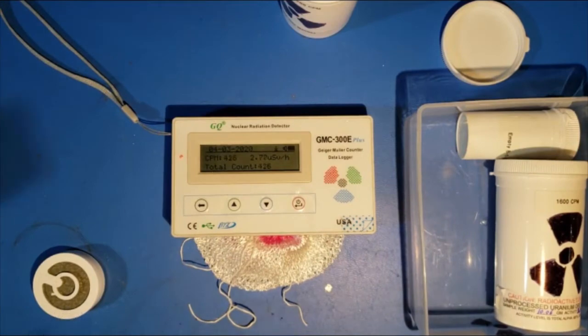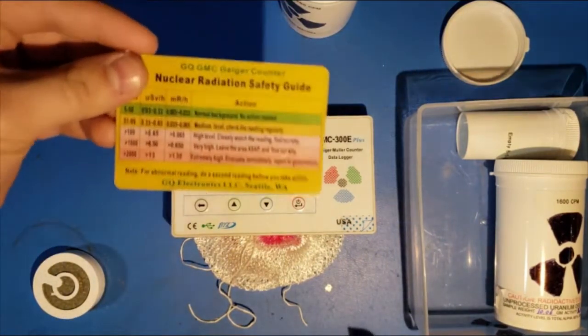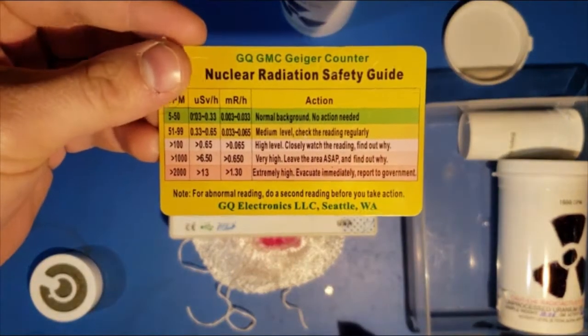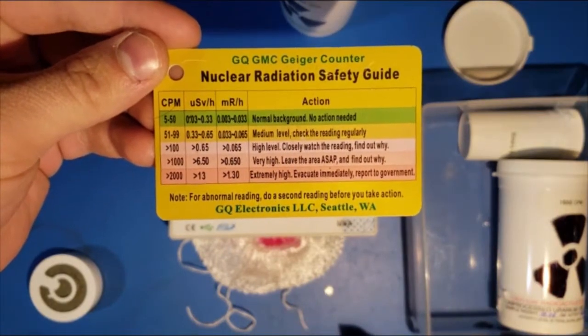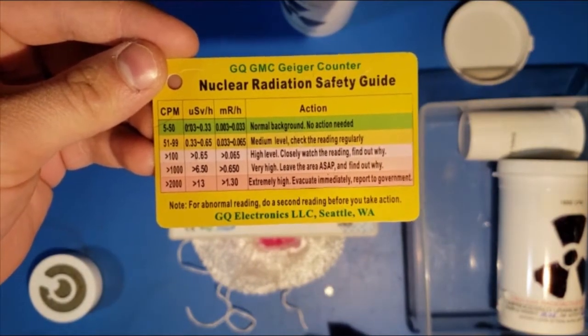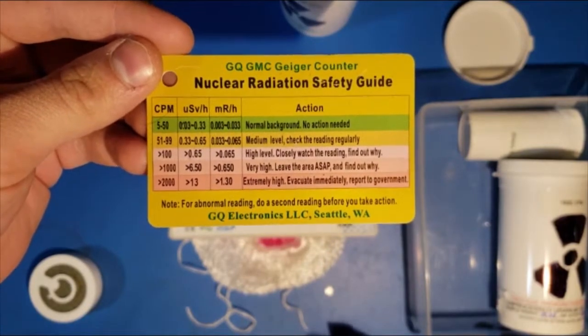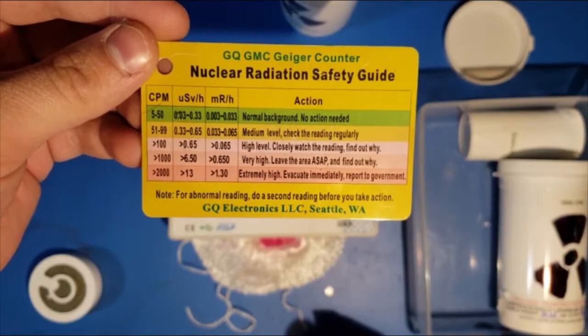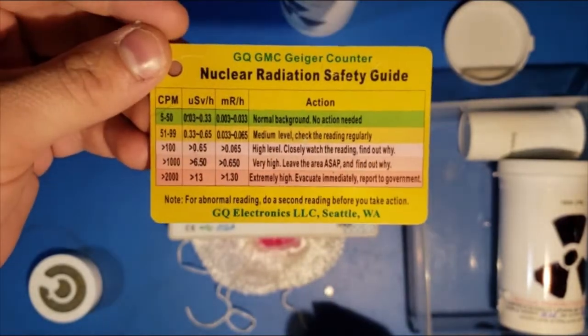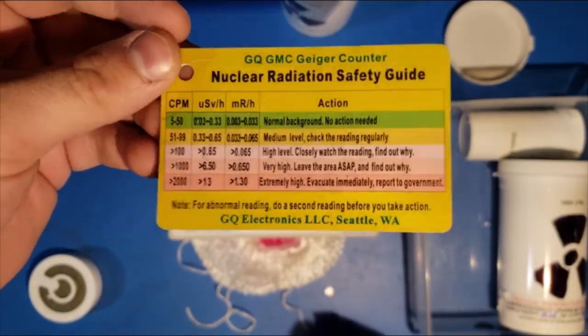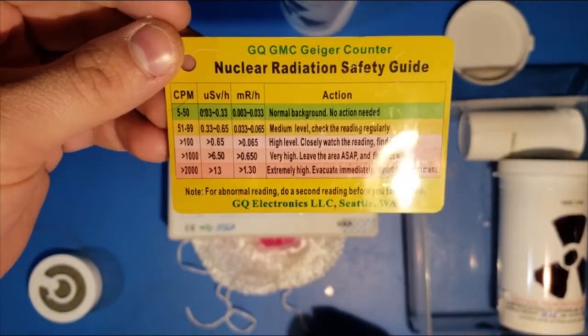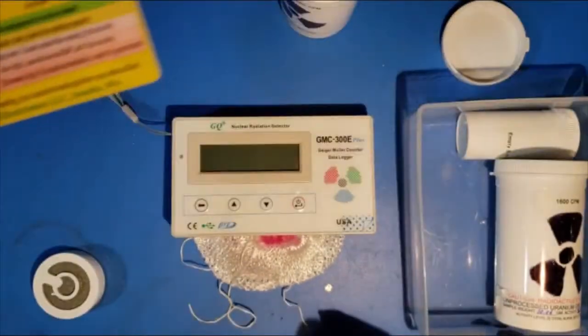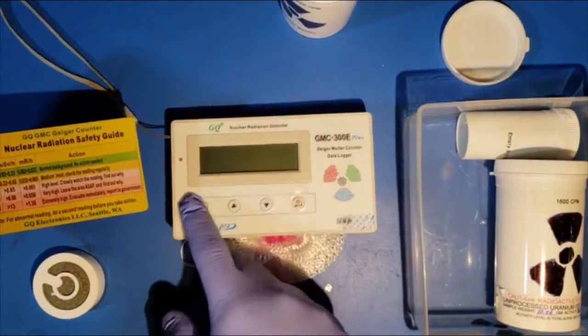When I bought this counter, it came with this handy-dandy little reference card, which I think is very helpful. My normal background, and I live within five miles of the Limerick Nuclear Generating Station, is about 20 counts per minute. Sometimes, it's as high as 25 or 30. At State College, where I go to school, here in Pennsylvania, I get higher readings often, just because of altitude, as opposed to anything else.